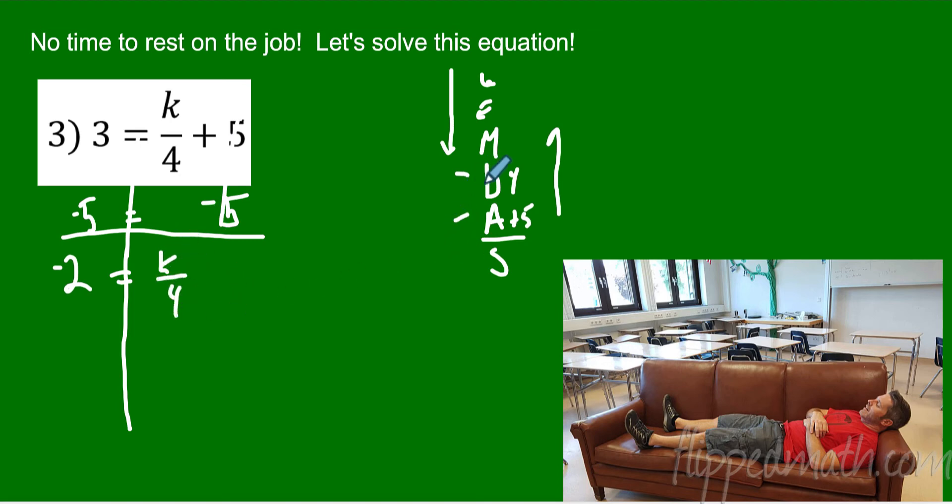Then I go to my next one. The opposite of dividing by 4 is multiplying by 4, so I'm going to multiply both sides by 4. And then what do I get? K, because these cancel out, they undo each other, equals negative 8.